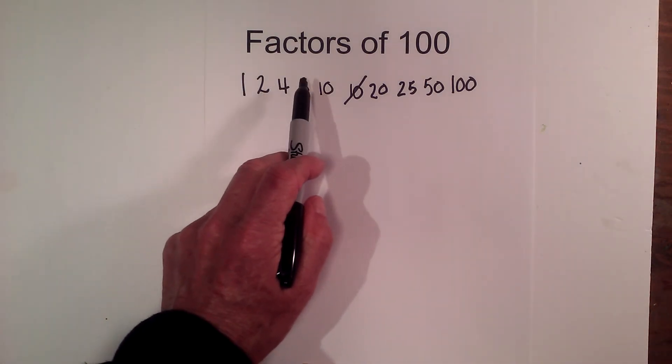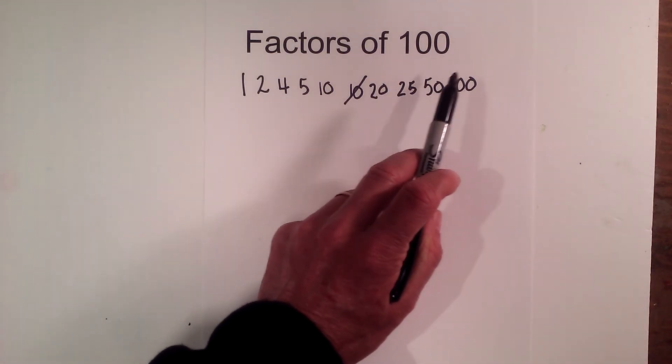So here are the factors of 100: 1, 2, 4, 5, 10, 20, 25, 50, and 100.